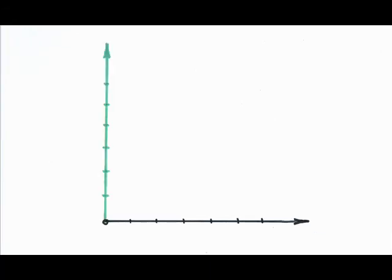These two lines, the axes, will allow us to measure what's happening between two variables. I'll call them something generic right now, like X and Y.